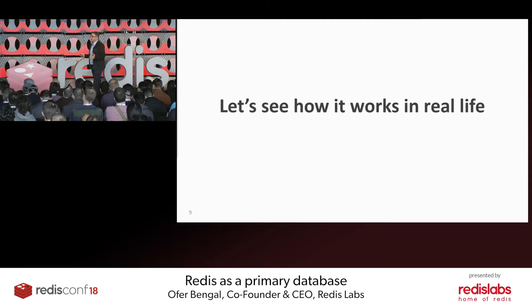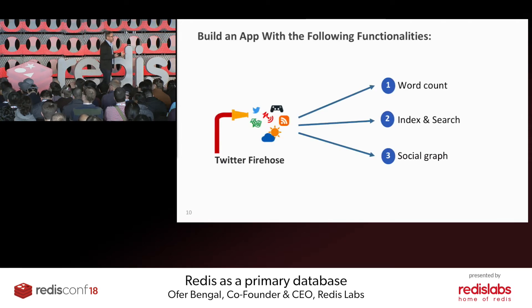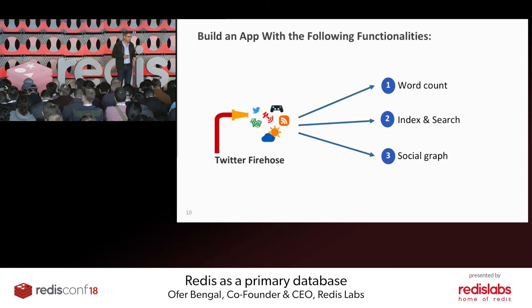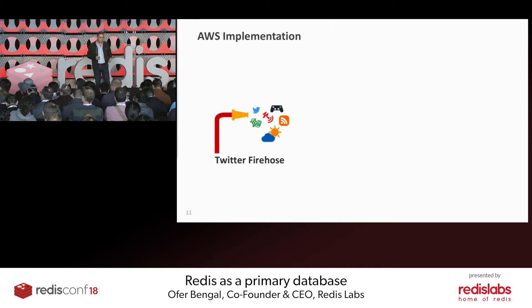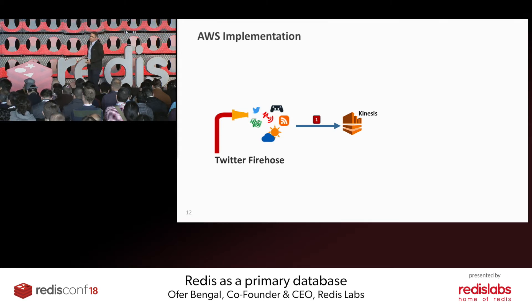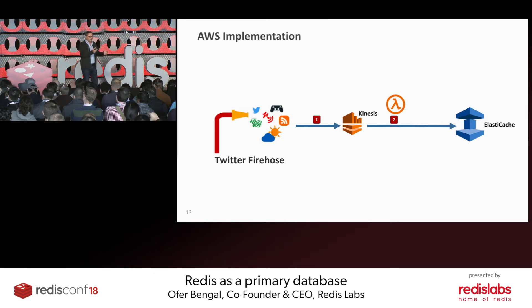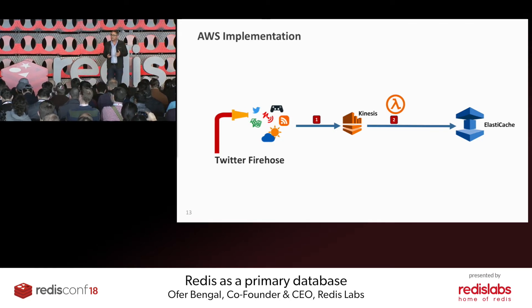We would like to show you today how this works in reality. For that, we've built an application which takes the Twitter Firehose and does word count, indexing and searching, and builds a social graph out of the data. Let's see how this could be implemented on AWS without Redis. You take the data from the Twitter Firehose, feed it into Kinesis, which is the streaming engine of AWS, then build a Lambda function to take the data from Kinesis and move it to ElastiCache so the Redis sorted set can do word count.